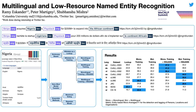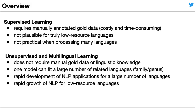Named entity recognition, or NER, is the process of identifying and tagging entities in text, as we see in the examples here in English, French, and Hindi. Supervised learning approaches require manually annotated data, which is costly and time-consuming.